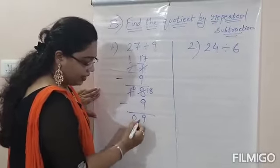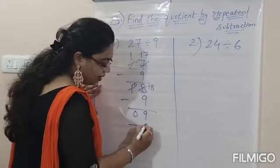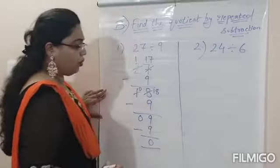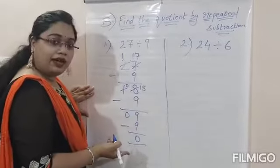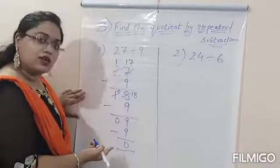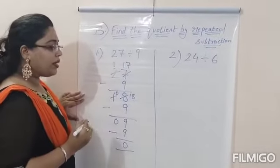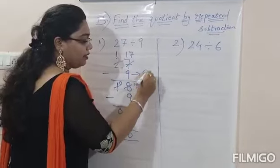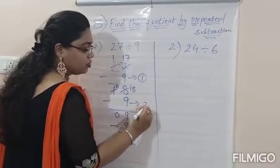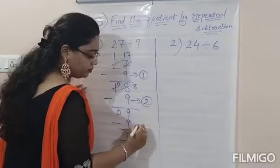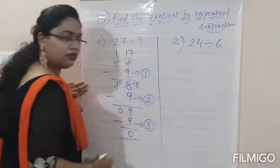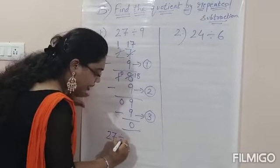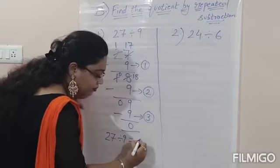Now again, we will subtract: 9 minus 9. The answer will be 0. So we have subtracted by 9 till we got the answer 0. Now let's see how many times we have subtracted 9. 1, 2, 3. So the answer: 27 divided by 9 equals 3.